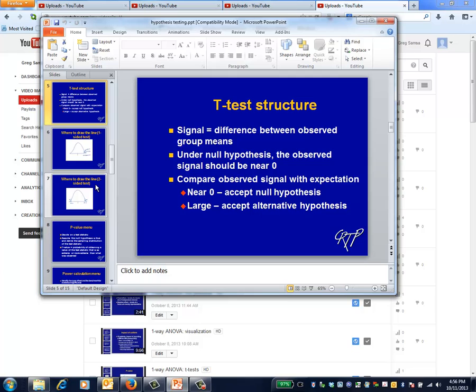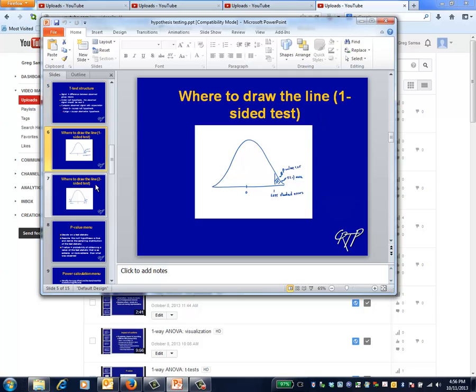Similarly, when this difference is very large, we should conclude that the null hypothesis is false, that is, that the true group means actually differ. But where should we draw the line? In other words, how large must the difference between the observed group means be in order to declare statistical significance?